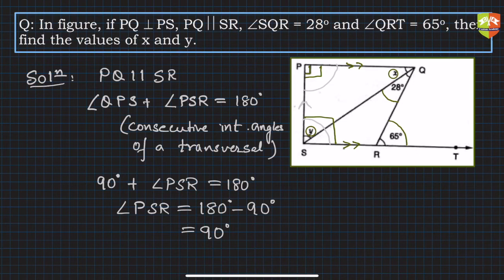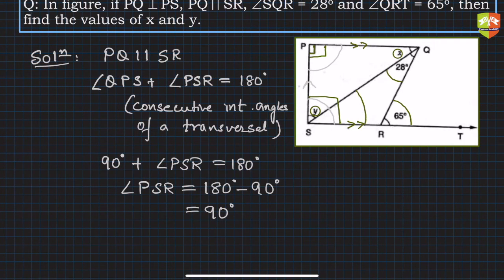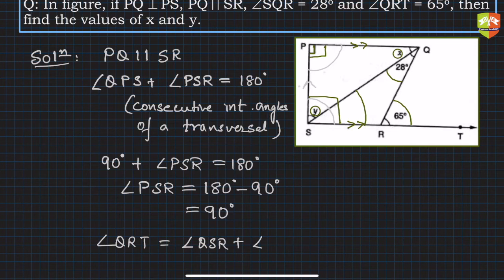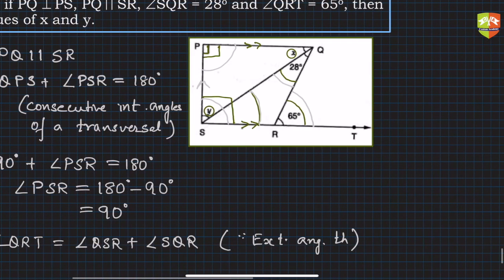Now if we find angle QSR, we can find y. Using the exterior angle theorem, angle QRT equals angle QSR plus angle SQR. The exterior angle theorem states that an exterior angle equals the sum of the two interior opposite angles. So 65 degrees equals 28 degrees plus angle QSR.